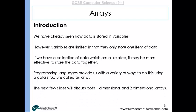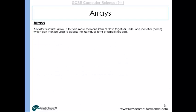We'll look at one-dimensional and two-dimensional arrays. Data structures allow us to store more than one item of data under one identifier, so under a particular name. We can use that particular identifier to access different items within the data structure.